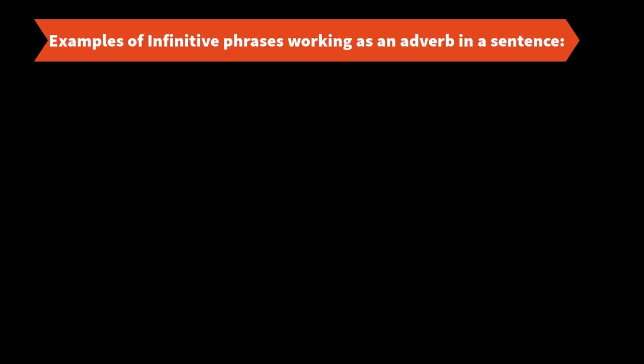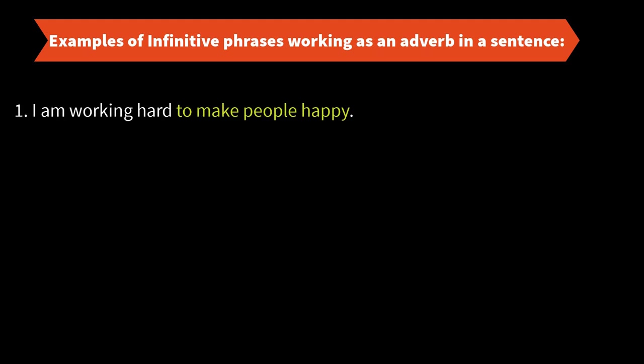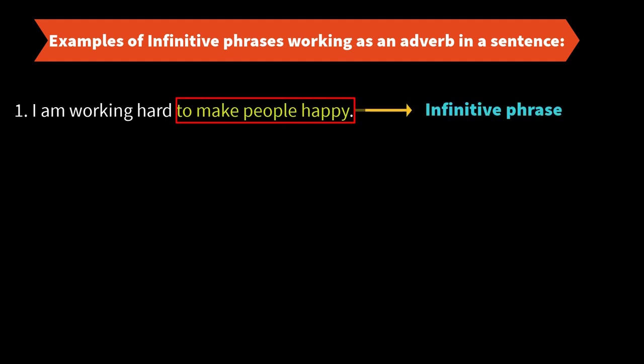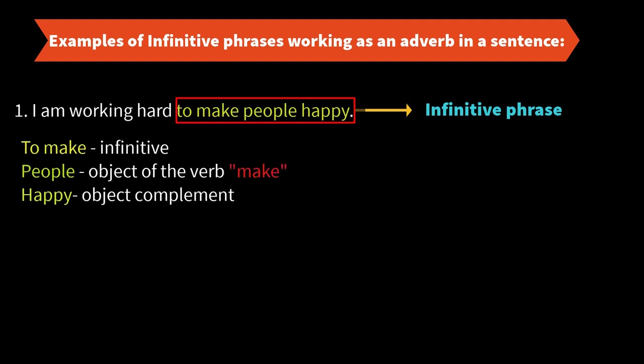Now let us take some examples of infinitive phrases working as an adverb in a sentence. I am working hard to make people happy. 'To make people happy' is the infinitive phrase working as an adverb because it answers the question: why am I working hard? It is modifying the verb 'working.' 'To make' is the infinitive, 'people' is the object, and 'happy' is the object complement. Why am I working hard? To make people happy.